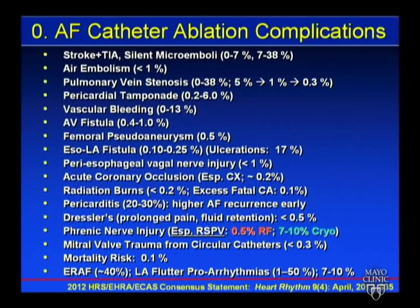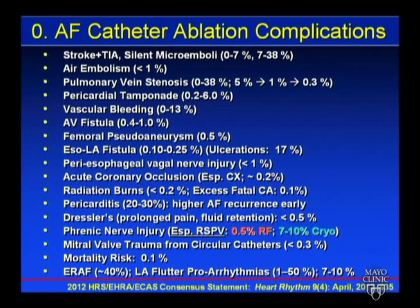Pericarditis incidence is 20–30%. There is literature on steroids after ablation — if there's significant pericarditis, steroids reduce risk by about two-thirds. Pericarditis is associated with higher early AF incidence, though not clearly linked with late recurrences. Dressler syndrome is unusual — these patients can have chest pain months after the procedure, elevated SED rate and CRP, and are very sensitive to fluid, potentially requiring diuretics for multiple months.